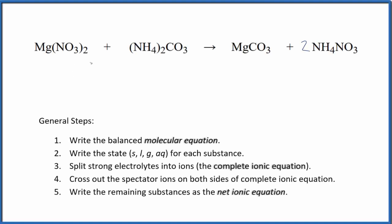To write the balanced net ionic equation for magnesium nitrate plus ammonium carbonate, first we balance the molecular equation. This is the molecular equation, and I've balanced it by putting a 2 in front of the ammonium nitrate. That balances the molecular equation.